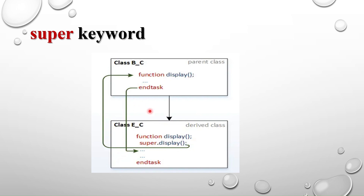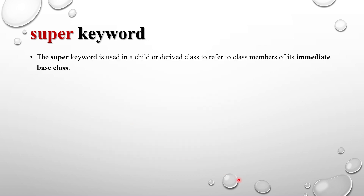super.display always refers to the immediate base class. So inside the child class display function, if I call super.display, it goes to the base class, searches for the display method, executes it, then returns and continues executing the next line. This is how the super keyword works.